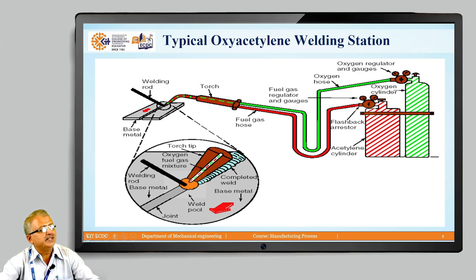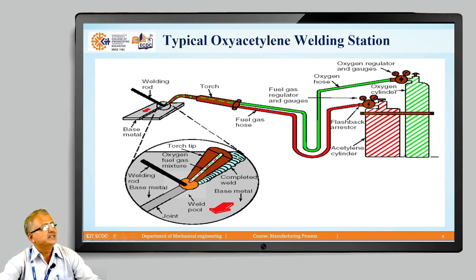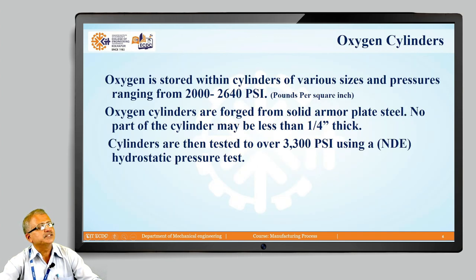The typical oxy-acetylene welding station setup shows the oxygen cylinder, oxygen regulator, oxygen hose, fuel gas regulator with gauges, and the acetylene cylinder with its regulator and hose. Both gases travel through separate pipes to the torch, where the proper mixture — equal proportion, more oxygen, or more acetylene — generates the flame. The welding or filler rod then deposits filler material to the weld joint.